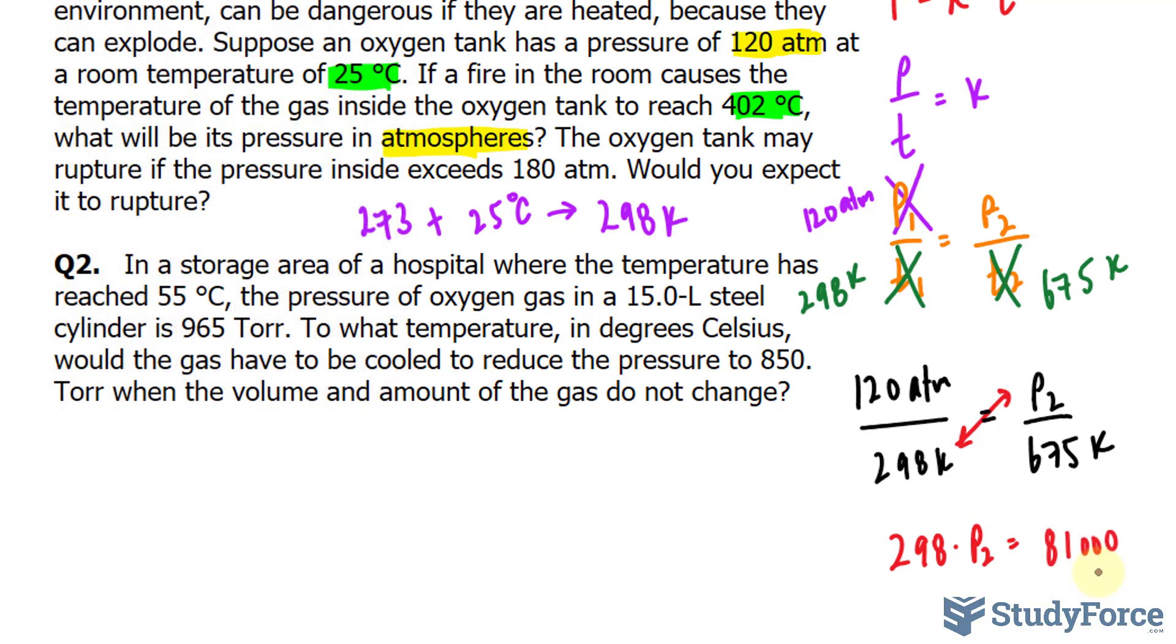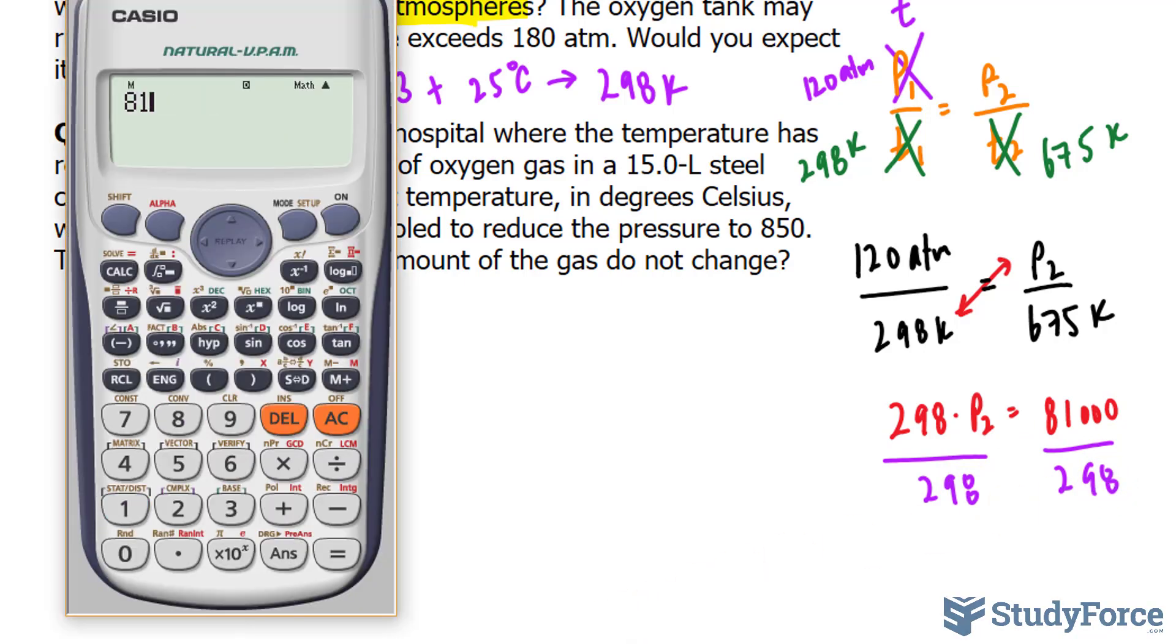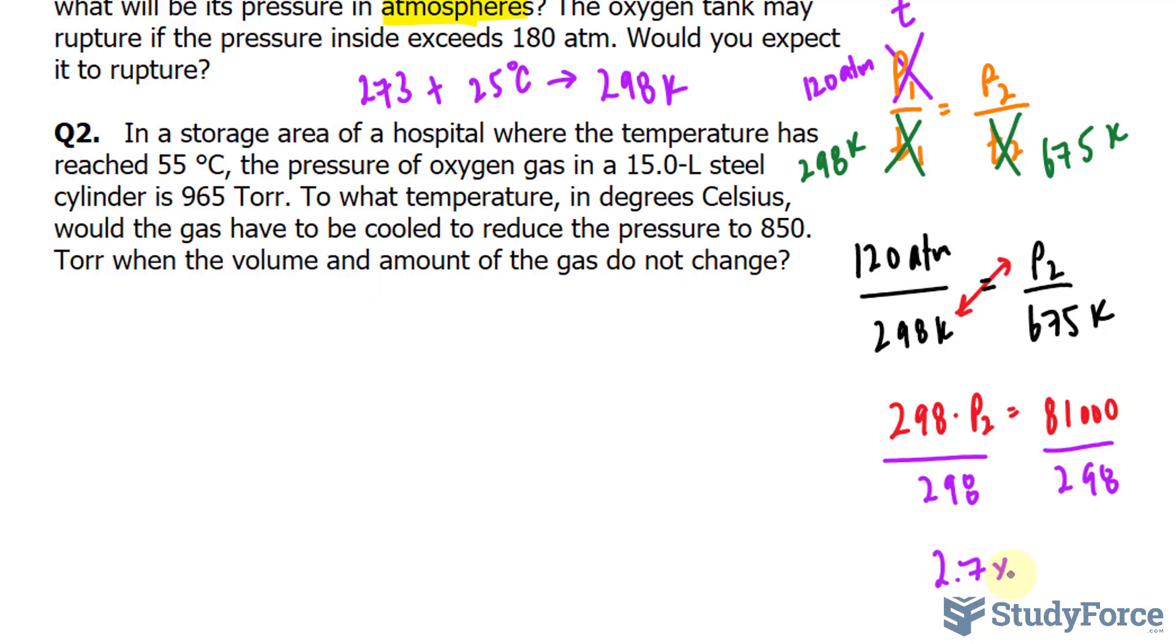Remember, our final answer needs to be to two significant figures because that is two significant figures, and these are both three. At this point, I divide both sides by 298, and we should end up with our p sub 2. So 81,000 divided by 298, and we get 271.8. We need this to two significant figures, which is 2.7 times 10 to the power of 3 atmosphere.